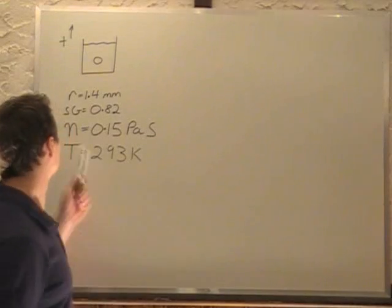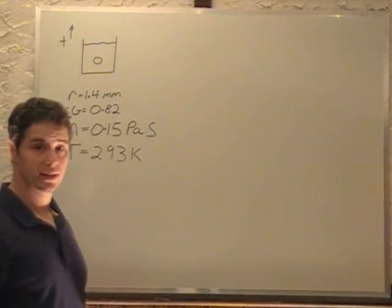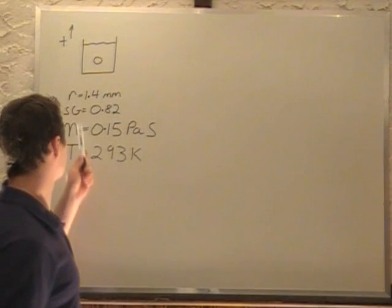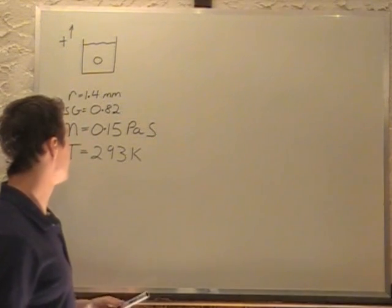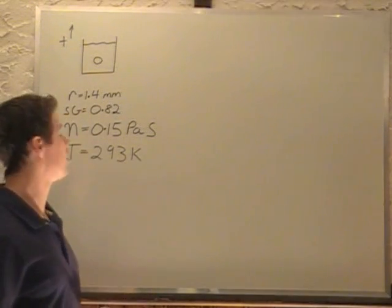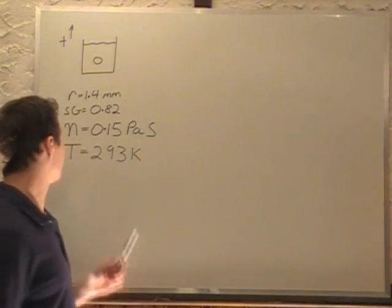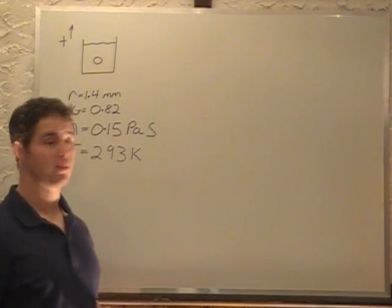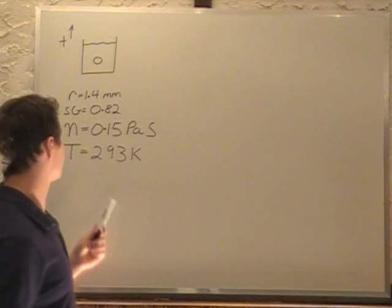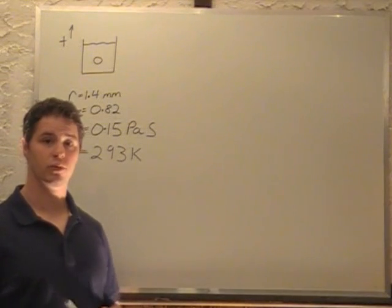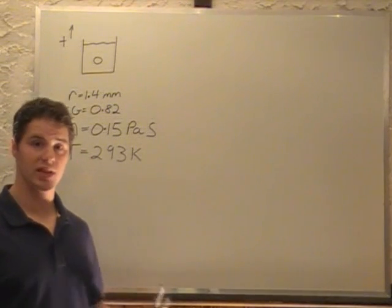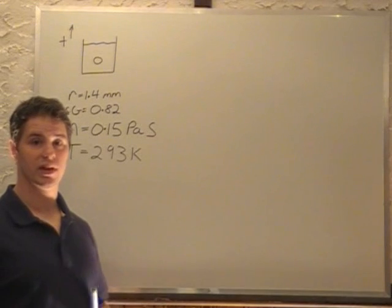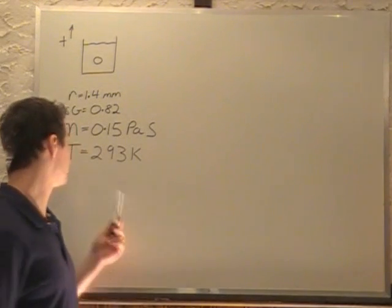In this problem we have a vat of oil with an air bubble in it. We're told that this air bubble has a radius of 1.4 mm and that the oil has a specific gravity of 0.82 and a viscosity of 0.15 pascal seconds. We're also told the temperature of this whole system is room temperature, which is 20 degrees celsius plus 273 to convert to kelvin, giving us 293 kelvin.